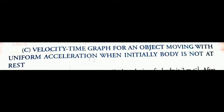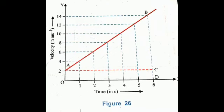Moving ahead: the velocity-time graph for an object moving with uniform acceleration when the body is initially not at rest — that is, at t = 0 the body already has some velocity. For this, consider figure 26. At t = 0, the velocity of the body is 2 meters per second. After that, the velocity increases at a constant rate — in every unit interval of time, the velocity increases by an equal amount. The velocity-time graph for such motion is represented by the line AB as shown.